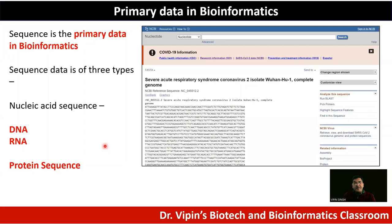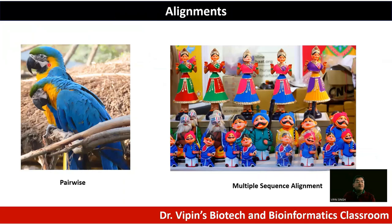Now that we have multiple sequences, we can do alignment. Alignment comes in two flavors: pairwise alignment, where you compare two sequences to look at similarity and infer homology or evolutionary relatedness, and multiple sequence alignment, where you compare multiple sequences to see which are more related to each other. Multiple sequence alignment can generate a phylogenetic tree showing evolutionary relatedness.